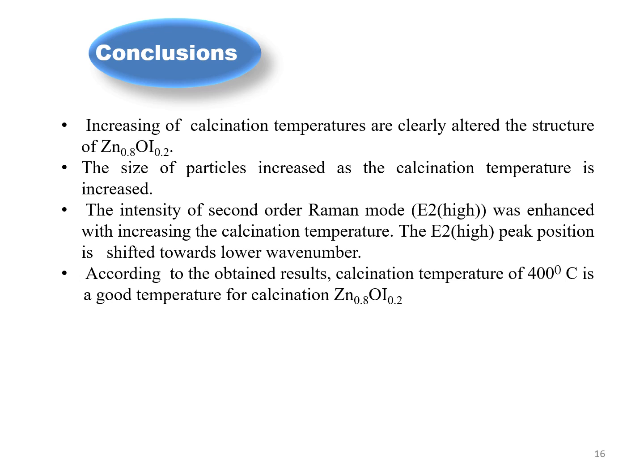According to the obtained results, a calcination temperature of 400 Celsius is a good temperature for calcination of iodine-doped ZnO. Further characterizations such as optical and electrical properties will be done on low concentration iodine-doped ZnO.